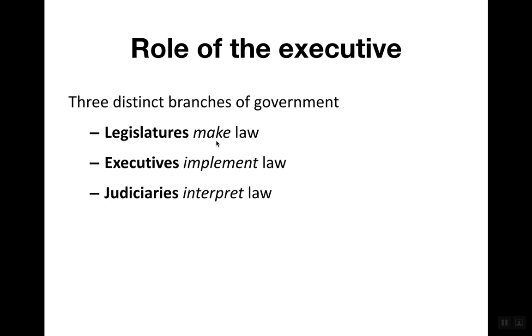Legislatures are the ones who create laws — they decide what the law is in practice. Executives implement the law and make sure it is being carried out and followed. Think if the legislative branch makes up a law regarding environmental protection: executives oversee and enforce the law and punish those found in violation. Judiciaries interpret the law. We'll talk about legislatures and judiciaries in later chapters, but the law relies on someone implementing it, and we're going to focus on the executives who do.